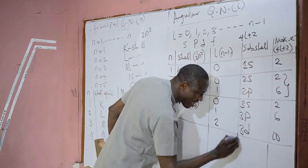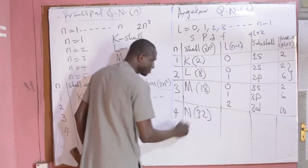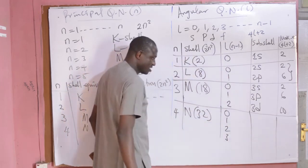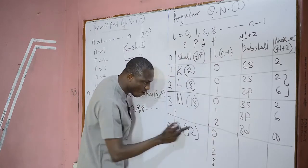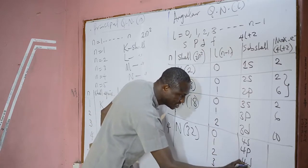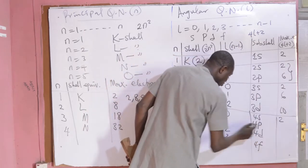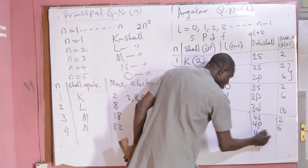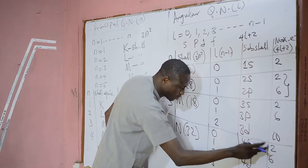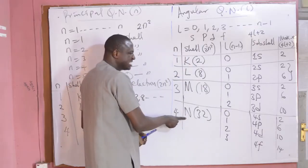When N=4, which is N shell, 4²×2=32 electrons. How many sub-shells? 4−1=3, so: 0, 1, 2, 3. That gives us 4S, 4P, 4D, and 4F sub-shells. Electrons: 4×0+2=2, 4×1+2=6, 4×2+2=10, 4×3+2=14. And 14+10+6+2=32, meaning all these sub-shells are found in this shell.